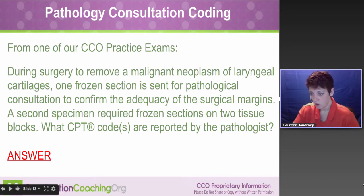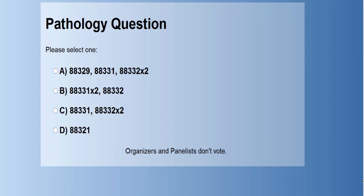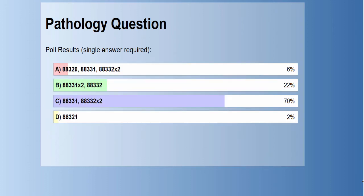I actually did a poll. I just want you to kind of take a gut feel for what you think the answer would be. This is what the answer key looked like. Answer A is 88329, 88331, 88332 times two. Answer B is 88331 times two and one unit of 88332. C is 88331 and two units of 88332, and answer D is 88321. So 6% said A, 22% said B, and 70% said C.